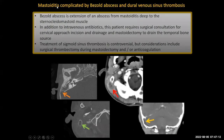This is mastoiditis complicated by Bezold abscess and dural venous sinus thrombosis. Bezold abscess is extension of an abscess from the mastoid deep to the sternocleidomastoid musculature and other deep cervical tissues. In addition to IV antibiotics, this patient requires urgent surgical consultation for cervical approach incision and drainage and mastoidectomy to drain the mastoid. Treatment of the sigmoid sinus thrombosis is controversial — considerations include surgical thrombectomy during the mastoidectomy and/or anticoagulation.